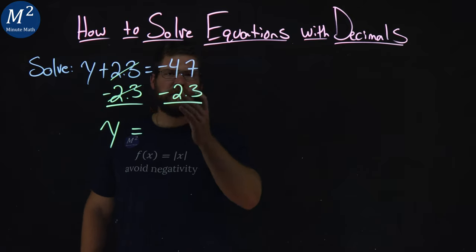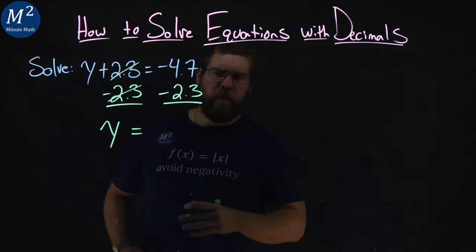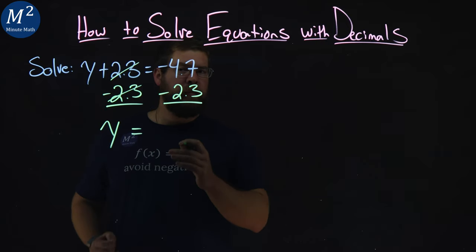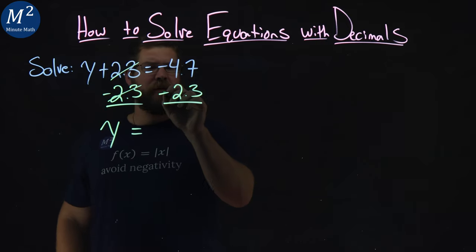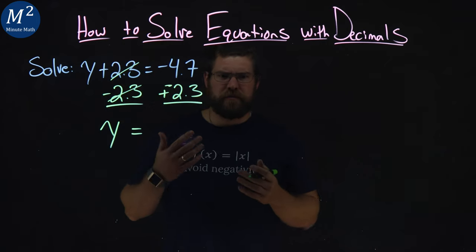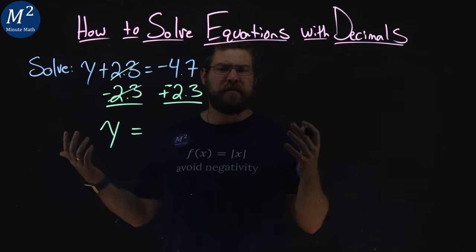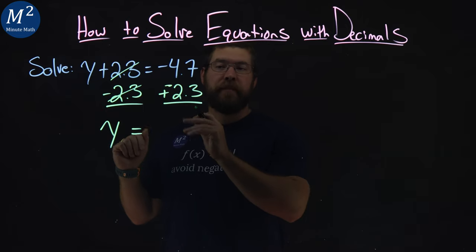Now on the right, this is a little interesting. Negative 4.7 minus 2.3. But subtracting 2.3 is the same thing as adding a negative. So if I add a negative 2.3, both of these numbers are negative. We're adding together, so we can treat them like they're positive numbers, knowing that they need to be negative.